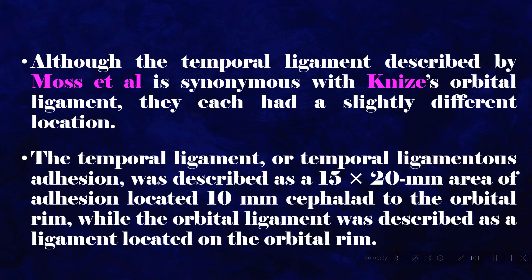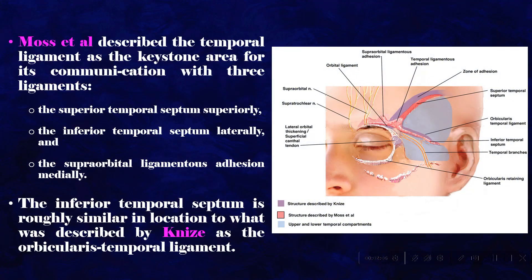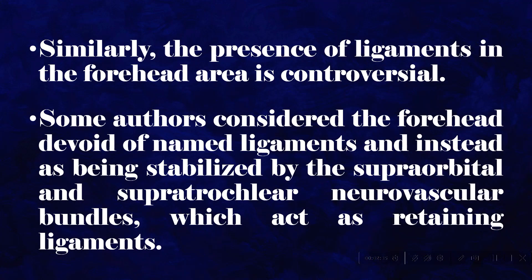Although the temporal ligament described by Moss et al. is synonymous with Knies' orbital ligament, they each had a slightly different location. The temporal ligamentous adhesion was described as a 15 by 20 mm area of adhesion located 10 mm cephalad to the orbital rim, while the orbital ligament was described as a ligament located on the orbital rim. Moss et al. described the temporal ligament as the keystone area for its communication with three ligaments: the superior temporal septum superiorly, the inferior temporal septum laterally, and the supraorbital ligamentous adhesion medially. The inferior temporal septum is roughly similar in location to what Knies described as the orbicularis temporal ligament. The presence of ligaments in the forehead area is controversial, with some authors considering the forehead devoid of named ligaments and instead stabilized by the supraorbital and supratrochlear neurovascular bundles, which act as retaining ligaments.